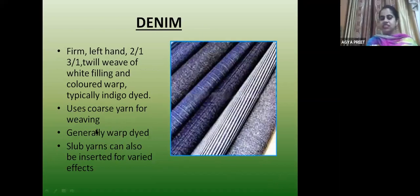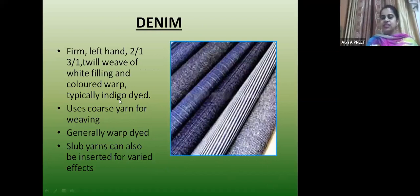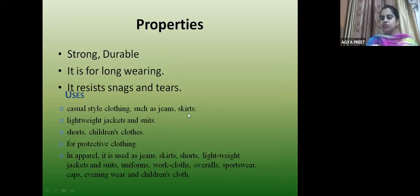Denim — everybody is familiar with this. The warp yarns are indigo dyed. It uses coarse yarn for weaving; slub yarns can also be used. It is long wearing and resistant to snags and tears. Used in casual wear clothing like jeans, skirts, shorts, children's clothes and also in protective clothing.